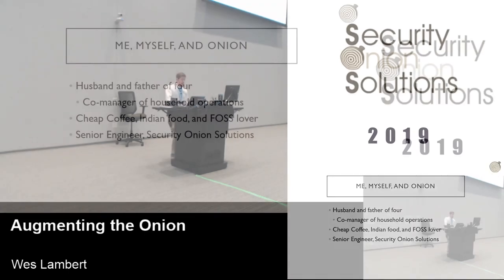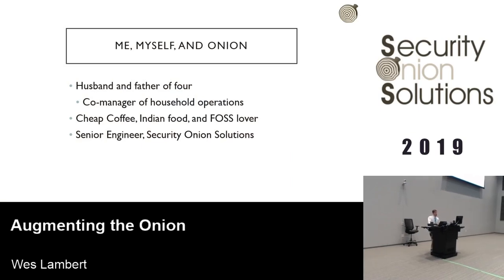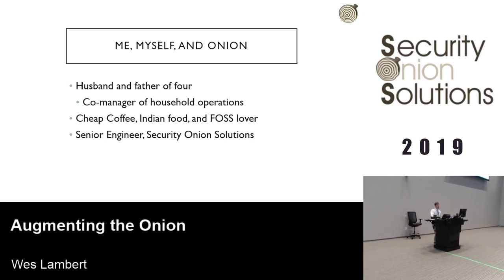Without further ado — I am a husband and father of four: one lovely wife and four crazy children, ages nine, ten, almost three, and seven months. Definitely got the hands full at home, but I love it. Also known as the co-manager of household operations. Some things I enjoy are cheap coffee — I get made fun of by Dustin for my coffee — Indian food, and free and open source software. I also work here at Security Onion Solutions as a senior engineer, helping customers maintain their deployments and developing custom solutions for them.